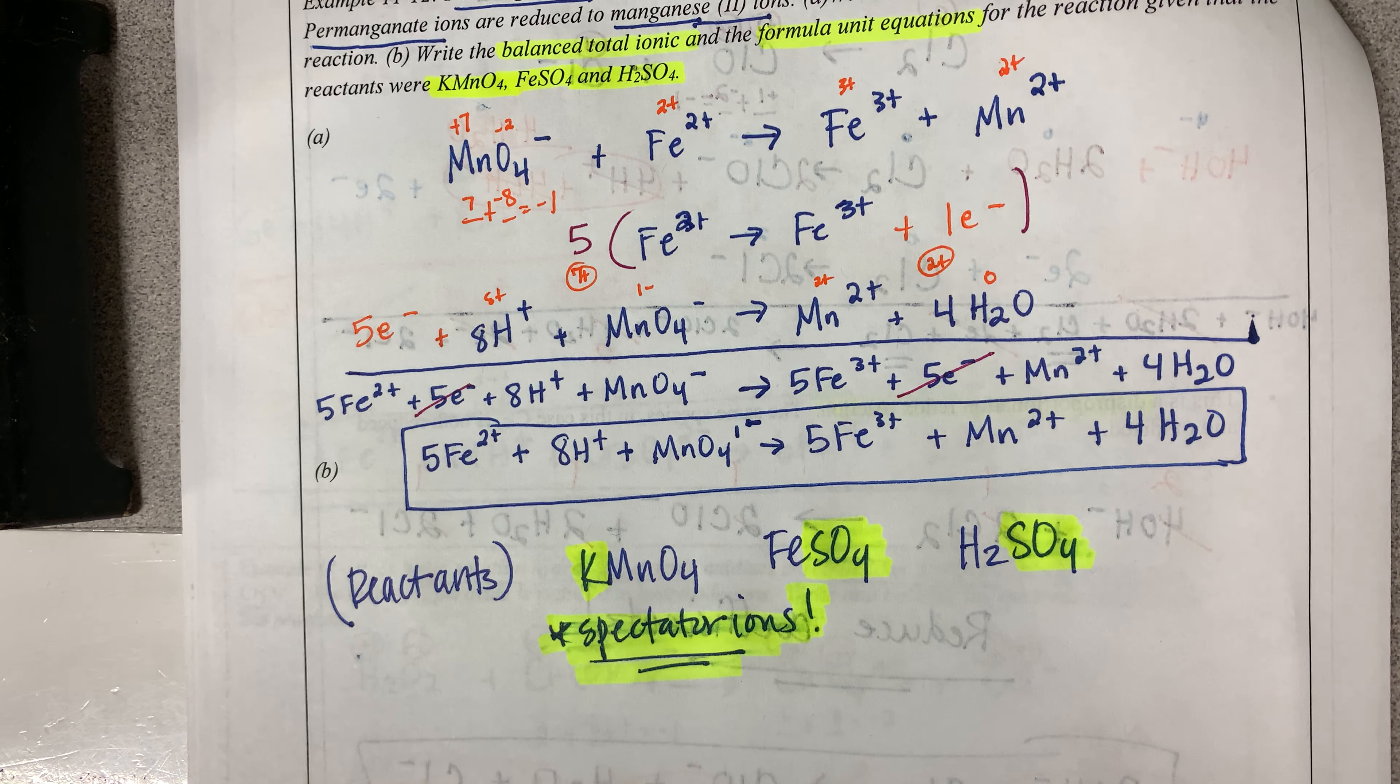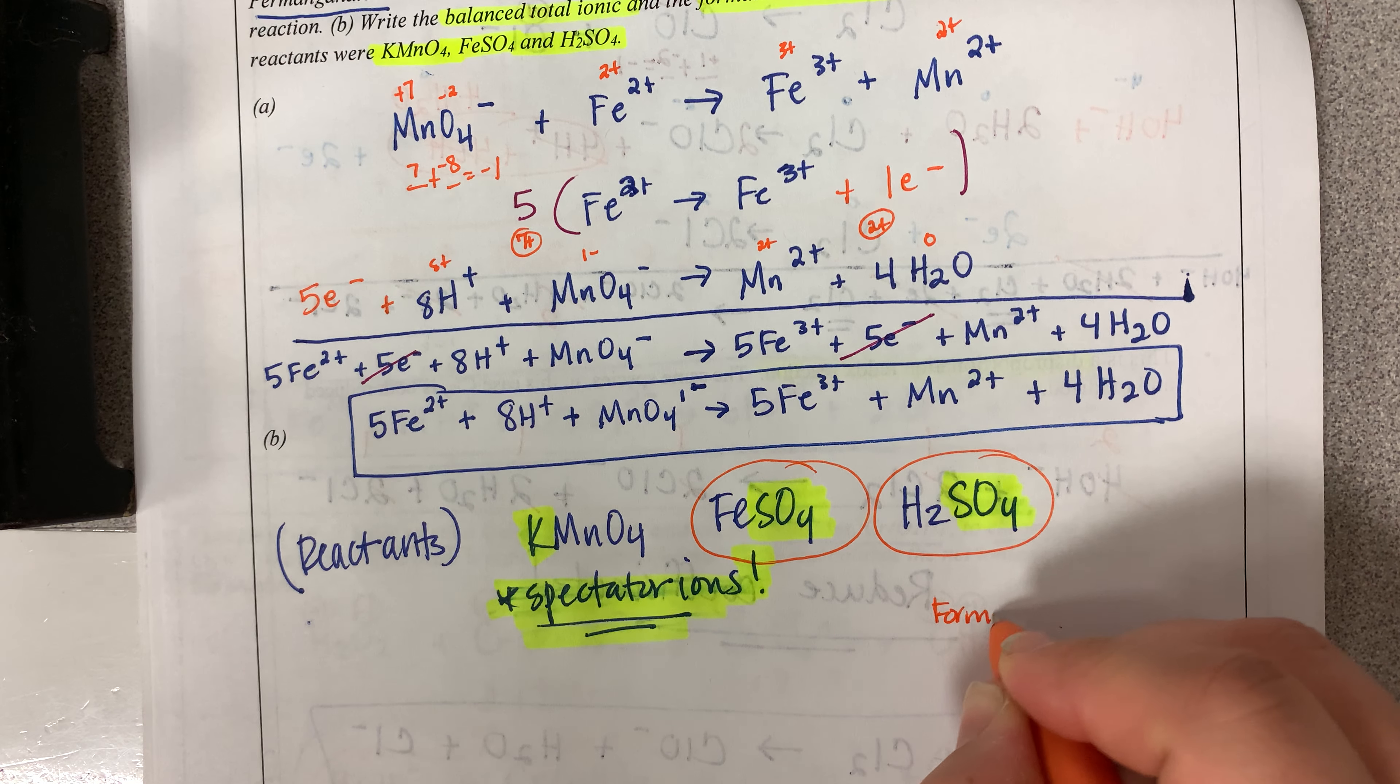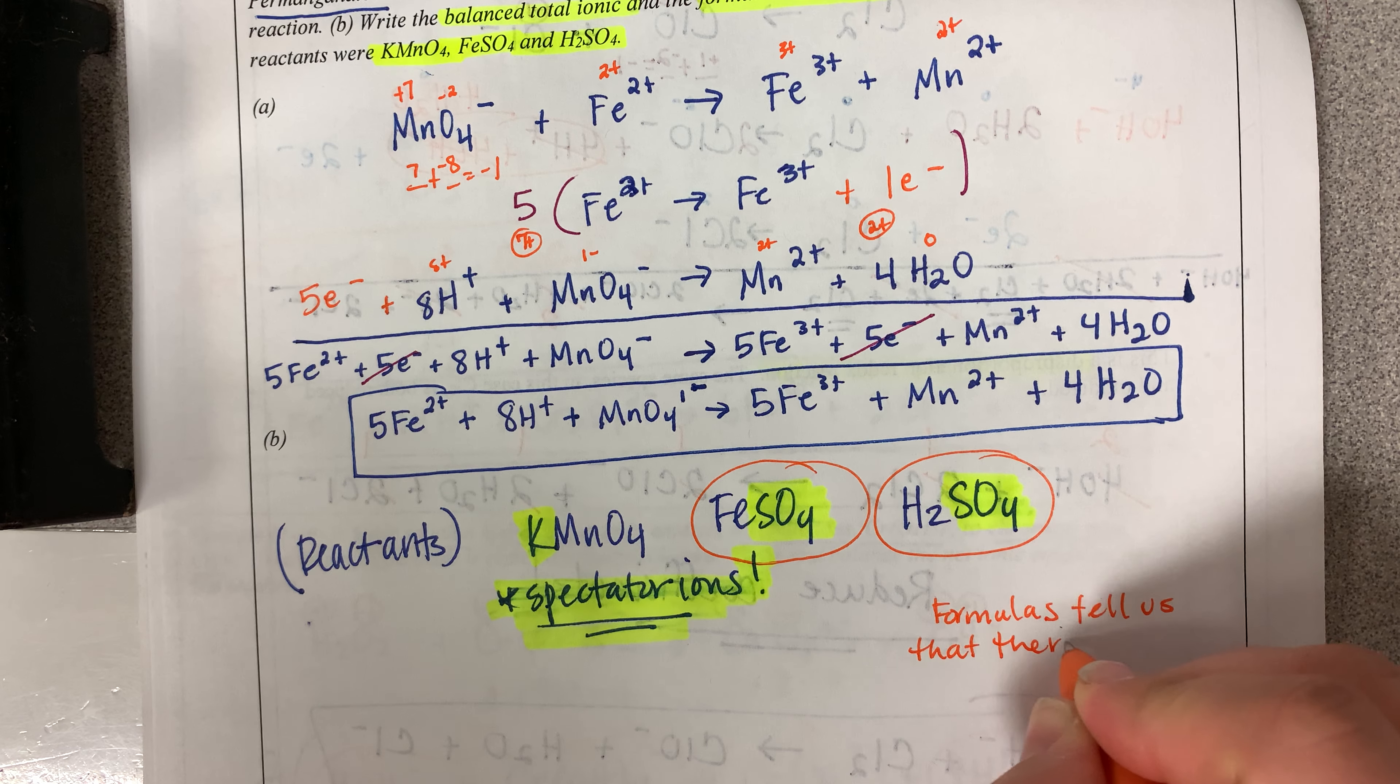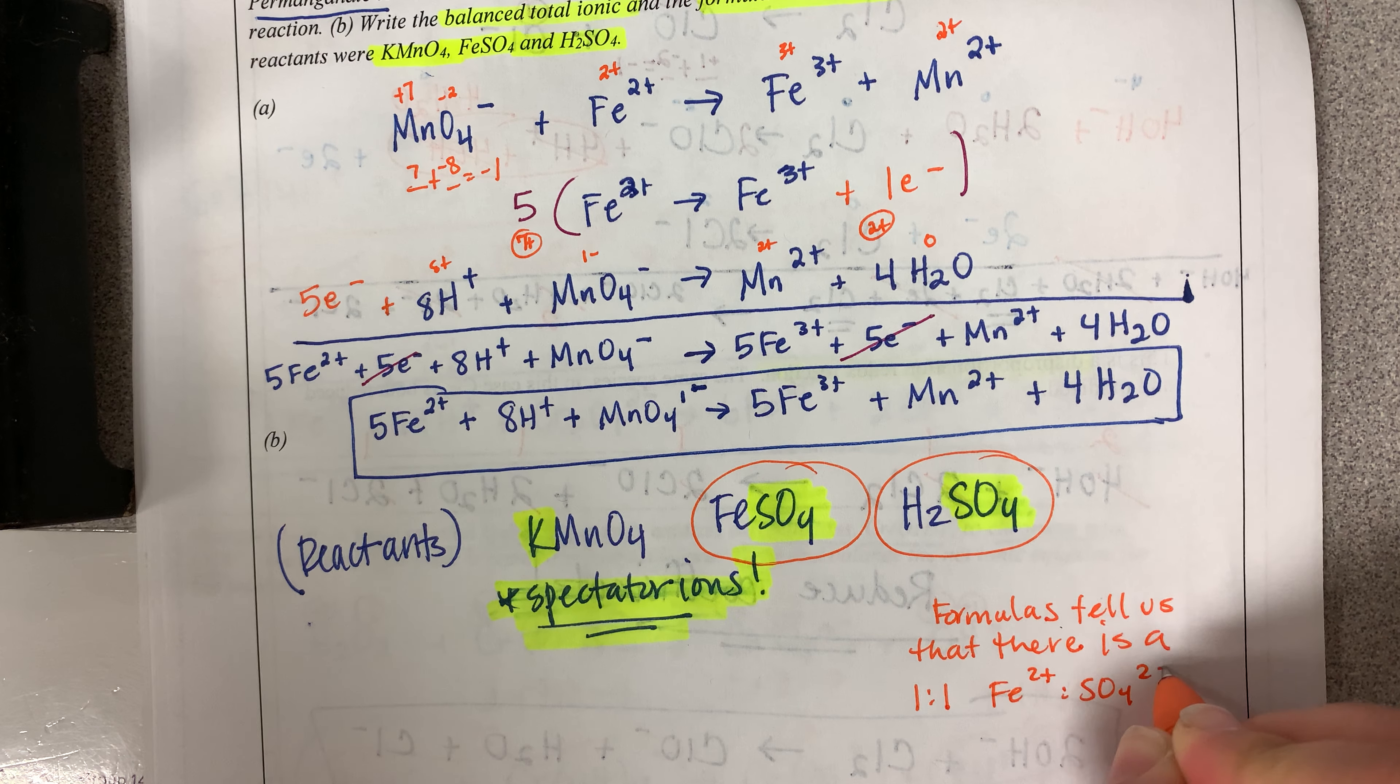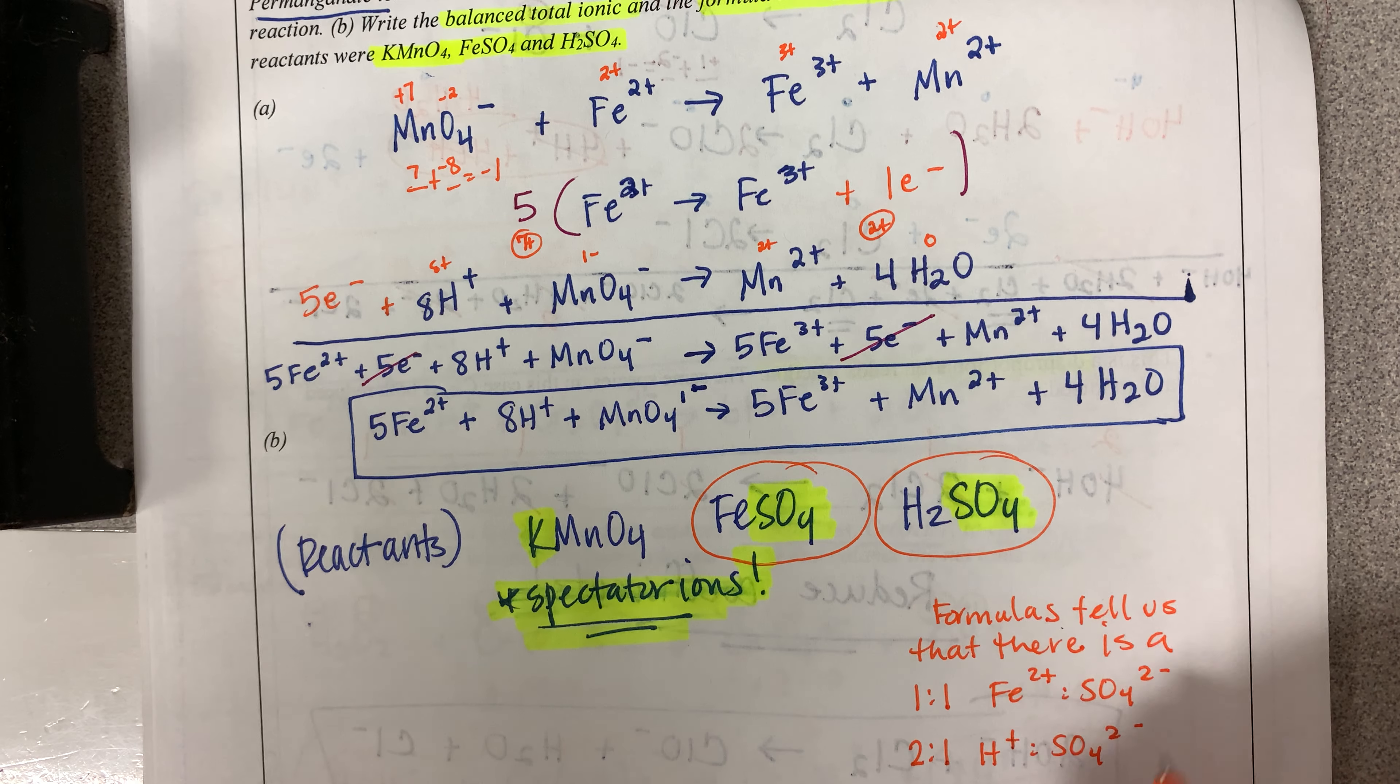I want you to pick up on are these formulas specifically. These formulas tell us that there is a 1 to 1 ratio of iron 2+ to SO4 2- and a 2 to 1 ratio of H+ to SO4 2-.